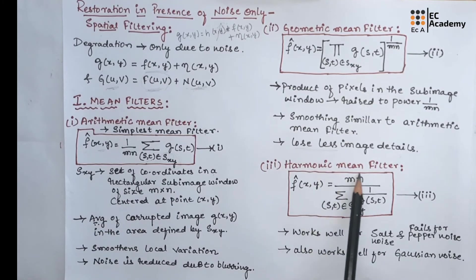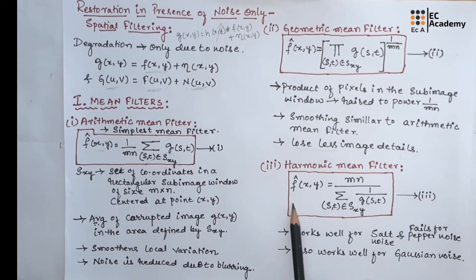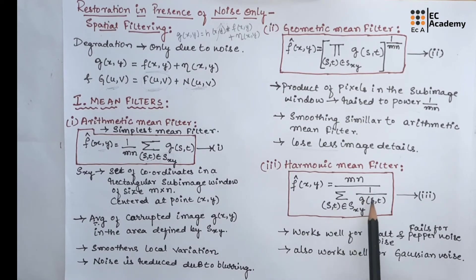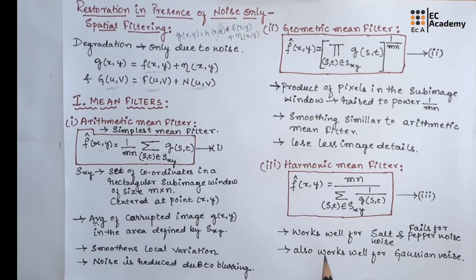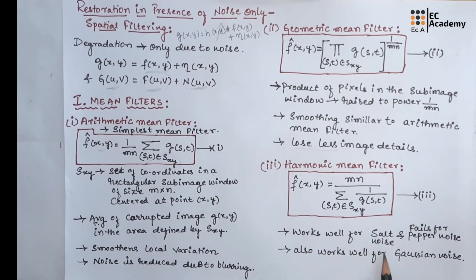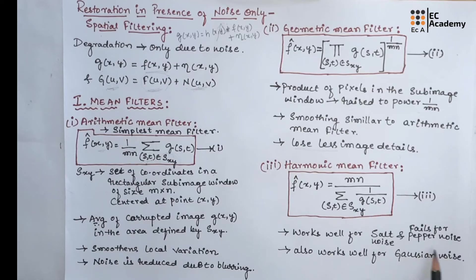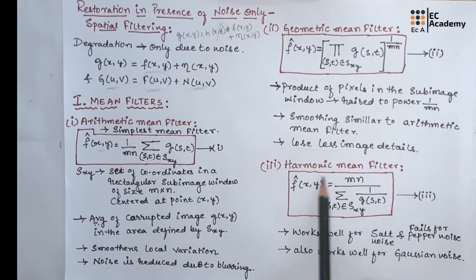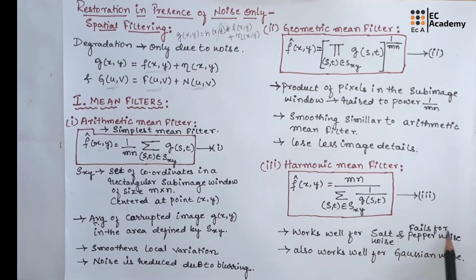The third one is harmonic mean filter that can be represented as F(x,y) = mn divided by summation of 1 divided by G(s,t). The harmonic mean filter works well for salt noise and it will fail for pepper noise. So, harmonic mean filter is best suited for salt noise and it will fail for pepper noise. It also works well for other types of noise like Gaussian noise.